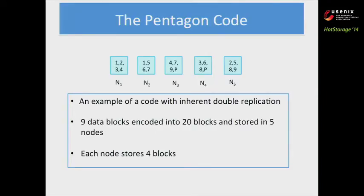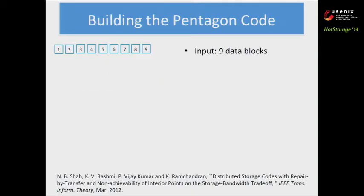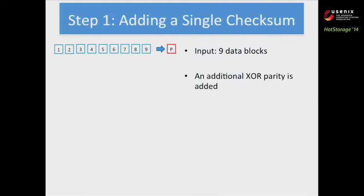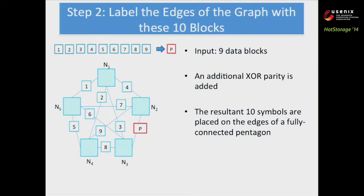Let's start with the Pentagon Code. This code is itself an example of a code with inherent double replication. It encodes nine data blocks into 20 blocks, stored in only five nodes — each node stores four blocks. Here are the nine input blocks. You first add a tenth block P, which is a parity — just the XOR of all nine blocks. Let N1 to N5 denote the five target nodes.